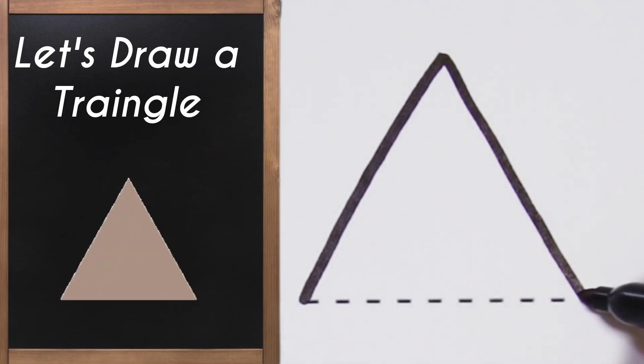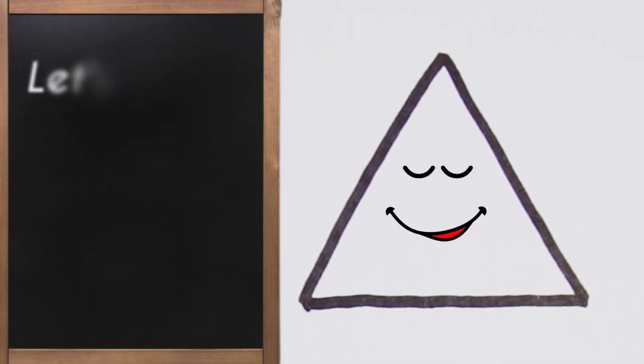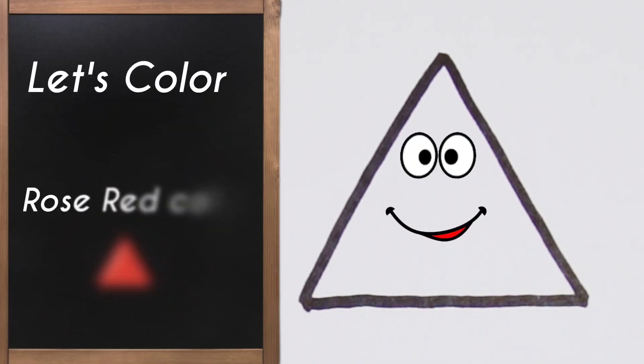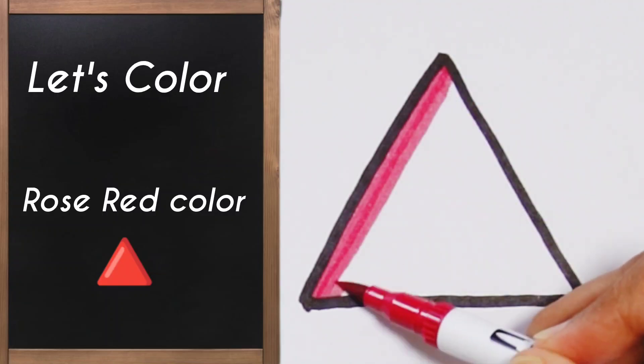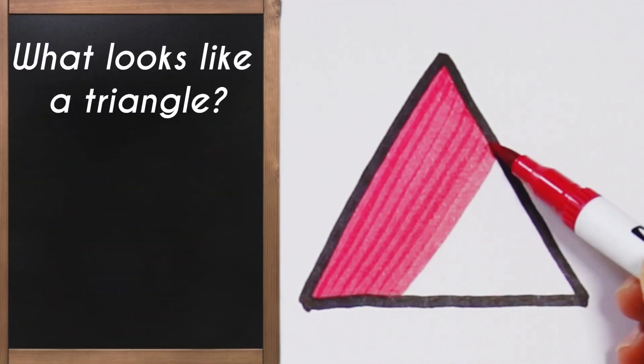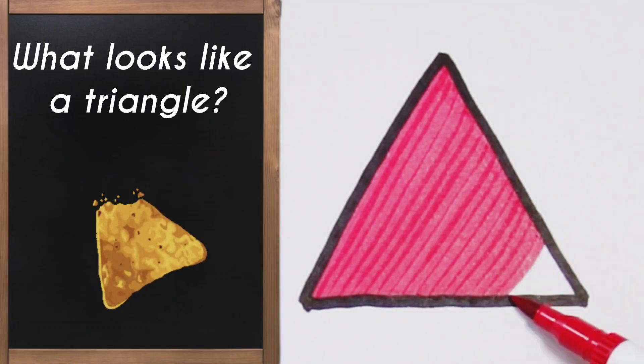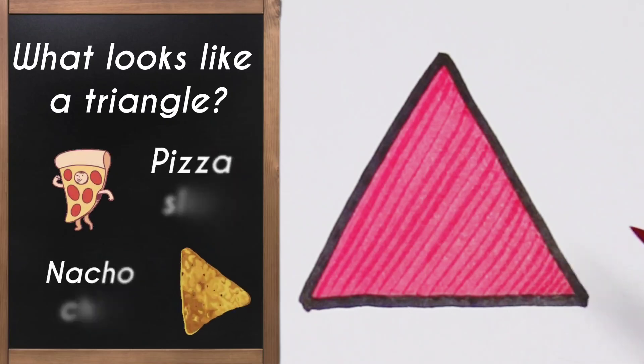...sides and three corners. Line up, line down, and across - it's a triangle! Can you think of things that look like a triangle? Yes, a pizza slice, a nacho chip - they all look like triangles!